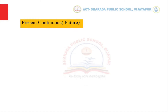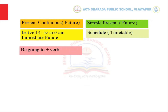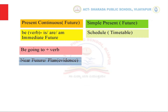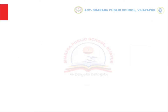Here is an overview: present continuous is used to talk about the immediate future; simple present tense is used to talk about scheduled events; 'be going to' plus verb is used to talk about the near future; and 'will' plus verb is used to talk about the far future or to make promises.